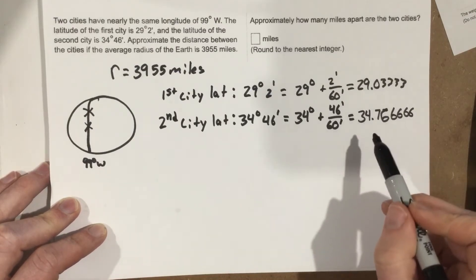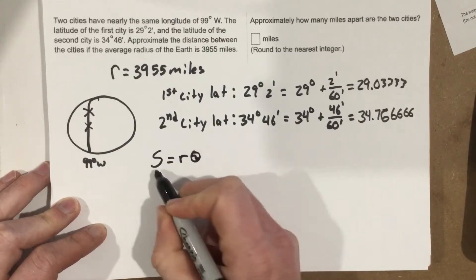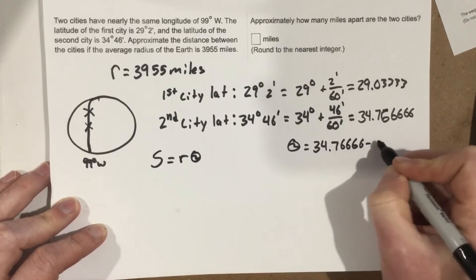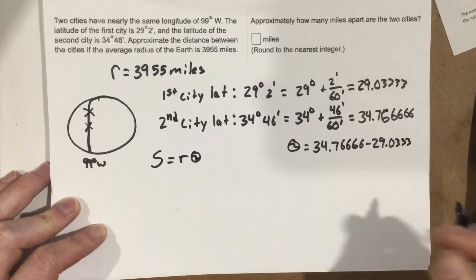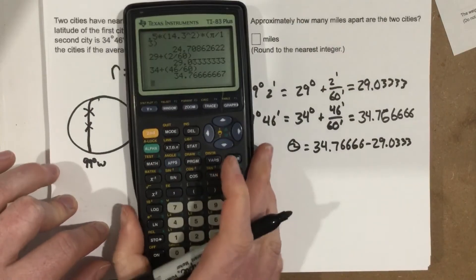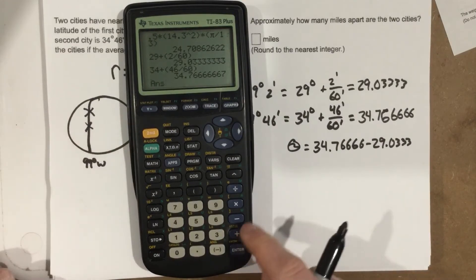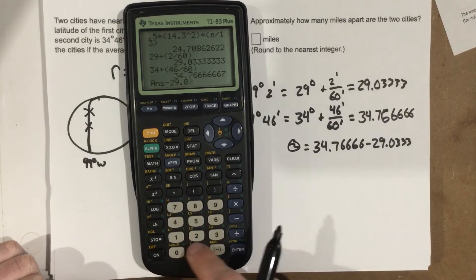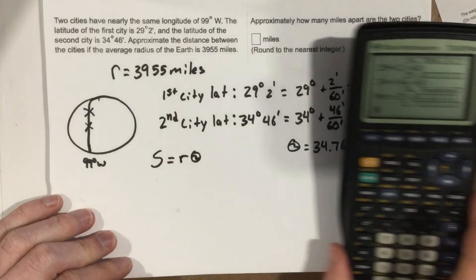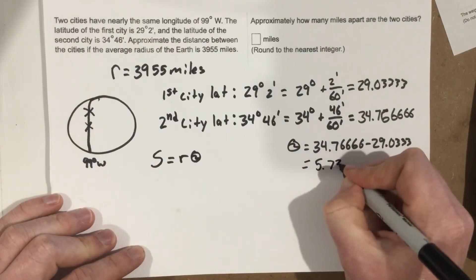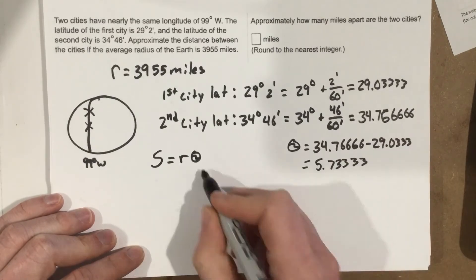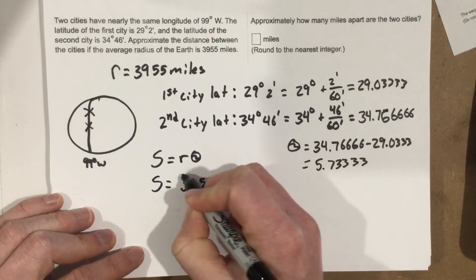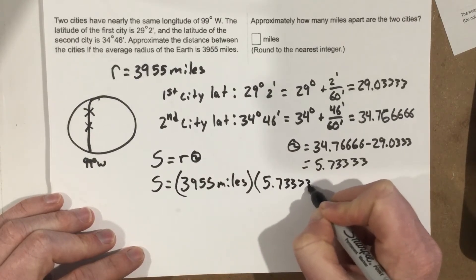We want to get the angle between them so we can use S equals R theta to find the arc length. Theta is going to equal 34.7667 minus 29.0333, and plugging that in using the second answer button, we subtract 29.0333 and get 5.7333 degrees. So our angle is 5.7333 degrees. Now we can use that: S equals 3,955 miles for the radius, times 5.7333 degrees.